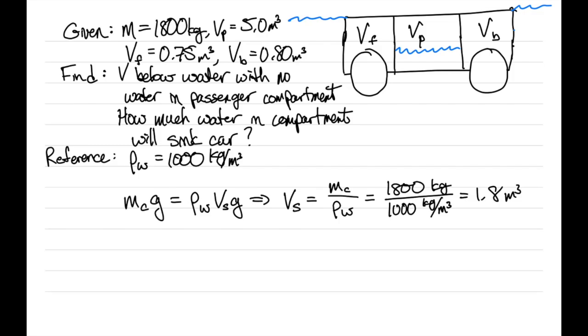Now we want to figure out how much water we can put in the passenger compartment that will cause the car to sink. We have the weight of the car plus the weight of the water in the passenger compartment, and that must be the buoyancy force, which is now density of water times the total volume of the car—the passenger compartment plus the front plus the back times g. We can cancel out a g.